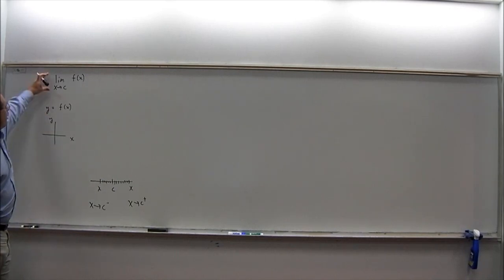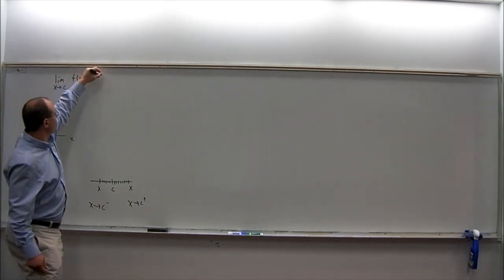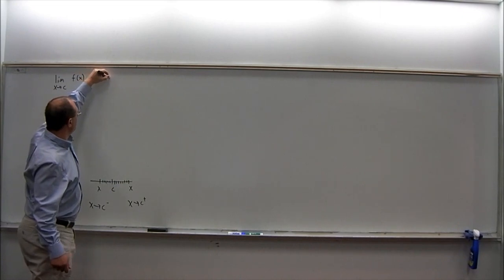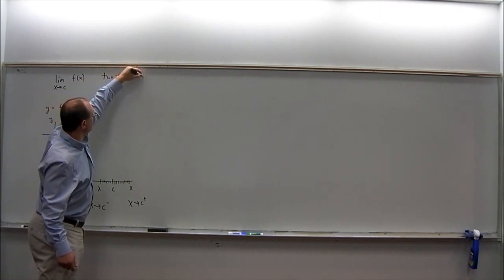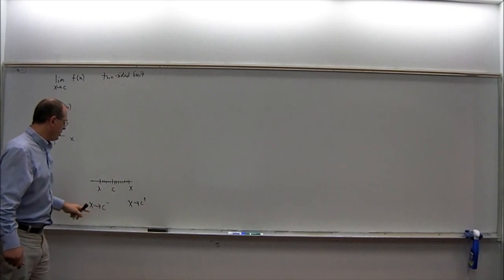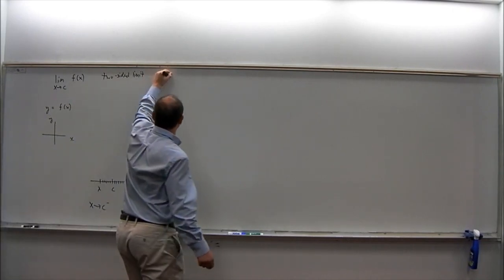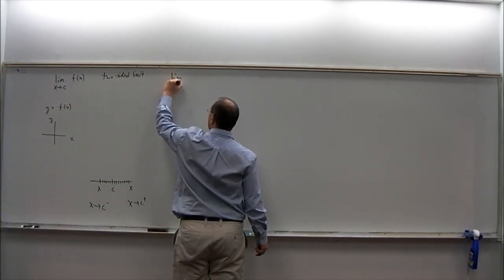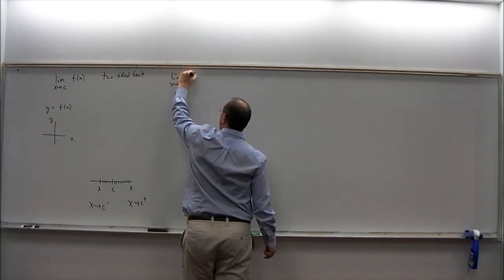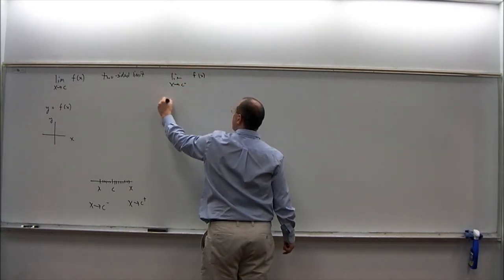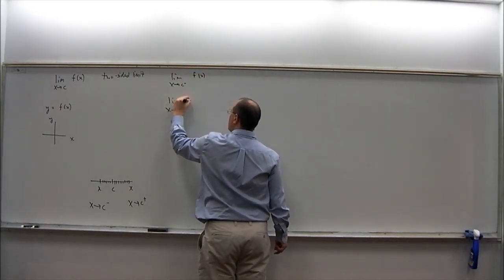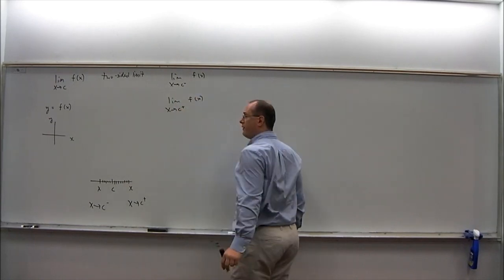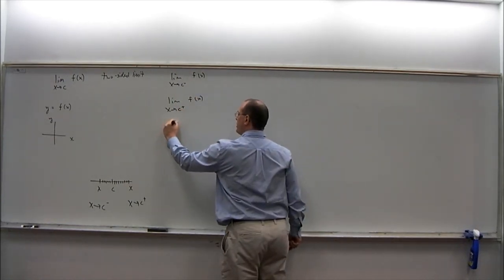So not only are we going to discuss the limit as x approaches c of f of x, which is called a two-sided limit, but we will also discuss the one-sided limits: the limit as x approaches c from the left of f of x, and the limit as x approaches c from the right of f of x. These are one-sided limits.